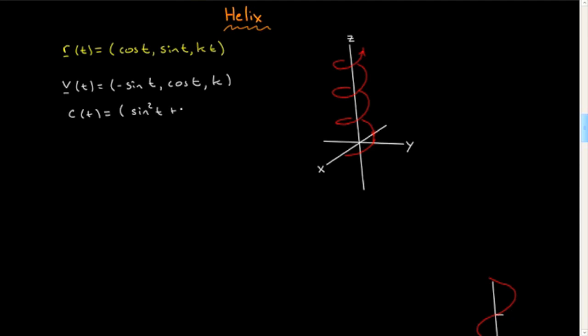...sine squared plus cosine squared plus k squared square root, to say it's (1 + k²)^(1/2) = sqrt(1 + k²).